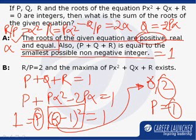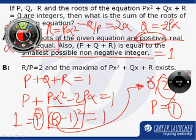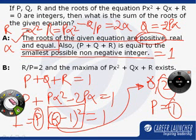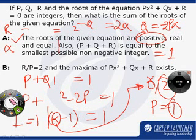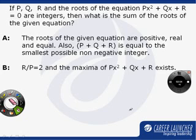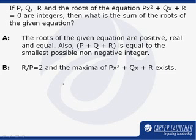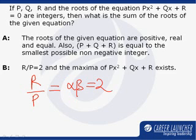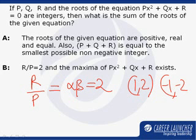Now, let us look at statement B. Statement B says R by P is equal to 2. Now, R by P is nothing but the product of the roots. Therefore, it is nothing but alpha beta, and if this is equal to 2, my choices for alpha beta are only 1, 2 or minus 1, minus 2.